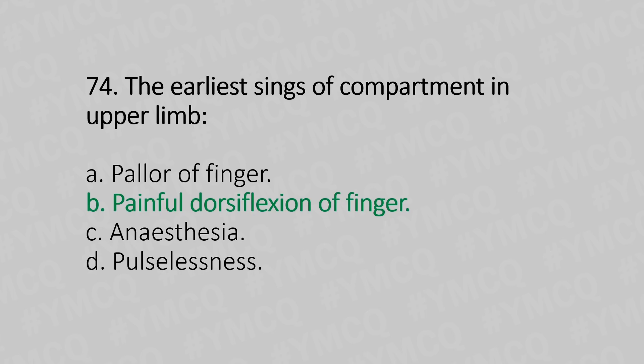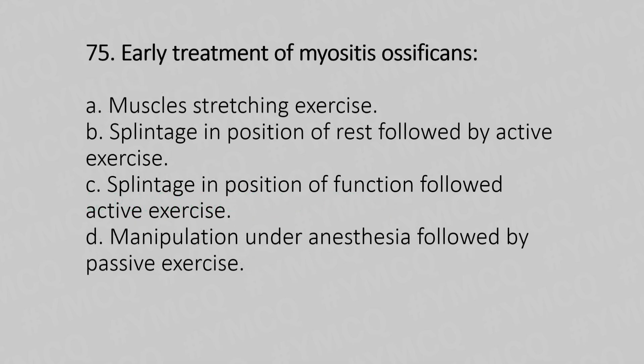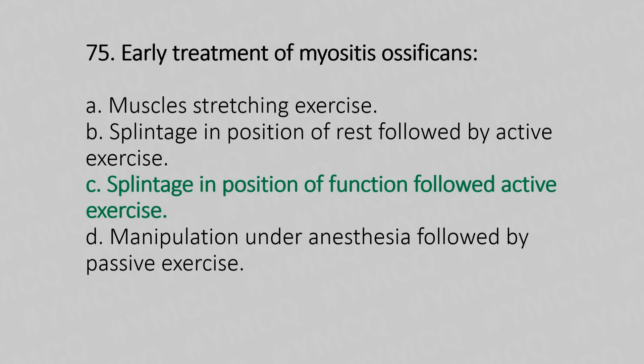Now let's move to question number 75. Early treatment of myositis ossificans: Option A, Muscle stretching exercises; Option B, Splinted in the position of rest followed by active exercise; Option C, Splinted in position of function followed by active exercise; Option D, Manipulation under anesthesia followed by passive exercise. And the answer is Option C, Splinted in position of function followed by active exercise.